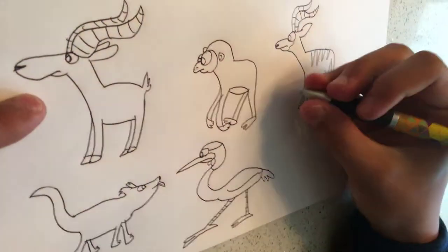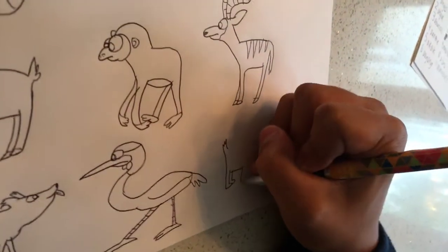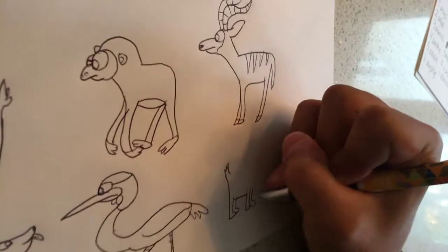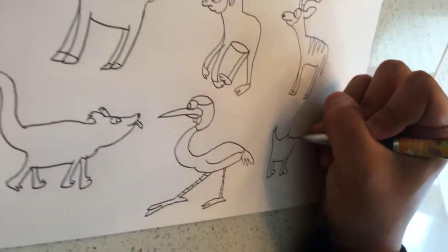B is for the bobcat. The bobcat lives in the desert. The bobcat is very smart and cunning as a fox.